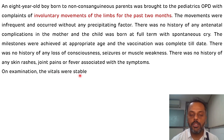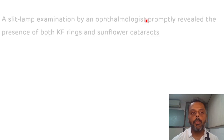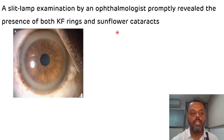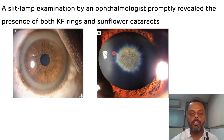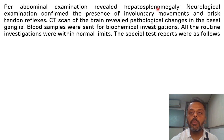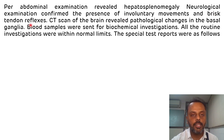On examination the vitals were stable. The only positive finding so far was involuntary movements of the limbs for the past two months. A slit-lamp examination by an ophthalmologist promptly revealed the presence of both KF rings and sunflower cataract. Abdominal examination revealed hepatosplenomegaly — that is, enlargement of the liver and spleen.